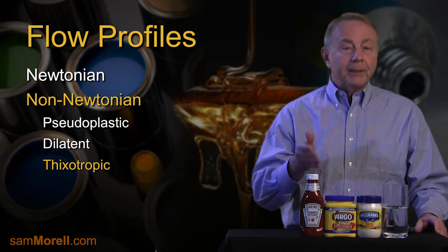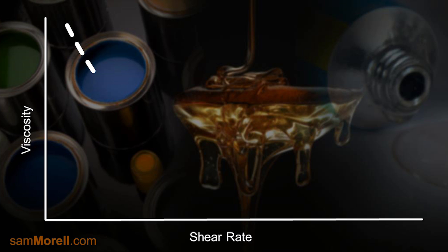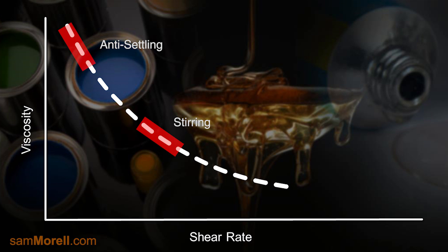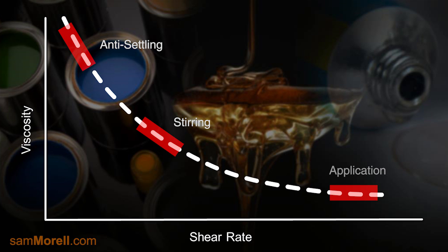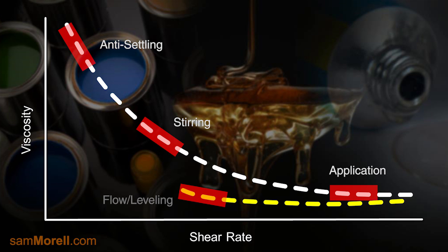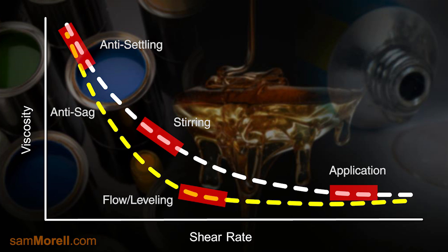Why should thixotropy be beneficial in areas like paints and coatings? At rest, when the shear rate is nil — for example, gravitational forces — stored paints and coatings will maintain the suspension of solid particles like pigments, extenders, and matting agents. When the paint is stirred, the viscosity is reduced, which facilitates the achievement of a uniformly mixed formulation. When the paint is applied through brush, roller, or spray, the high shear rate significantly reduces the viscosity for effective spreading and coverage. When brushing stops, eliminating shear, the slow viscosity recovery permits sufficient time for the paint to flow and level, which diminishes brush marks. At rest, full viscosity is achieved and sagging of the paint, particularly on vertical surfaces, is reduced.